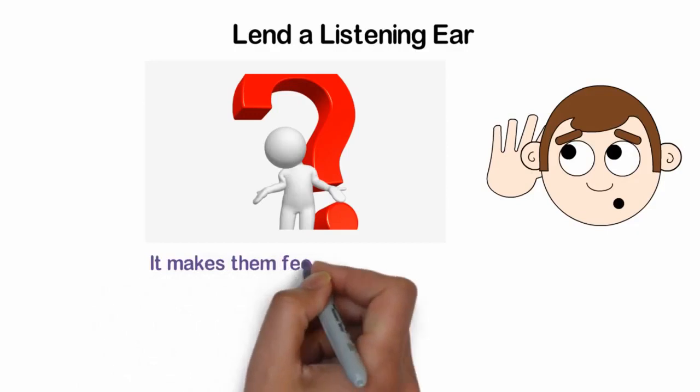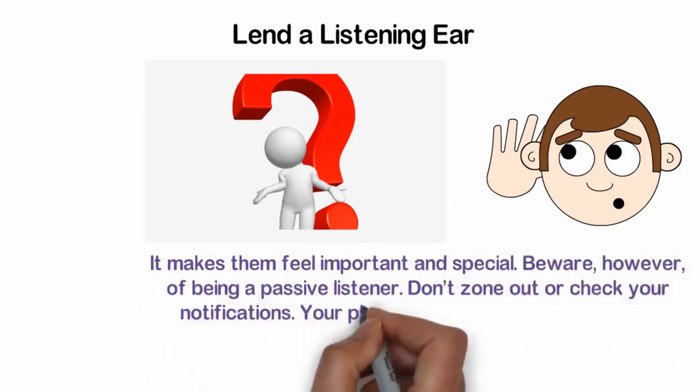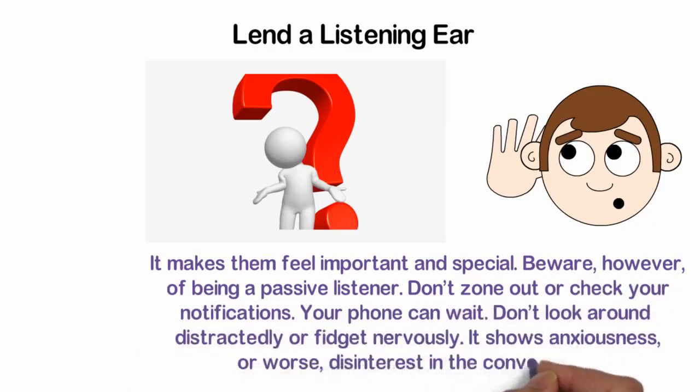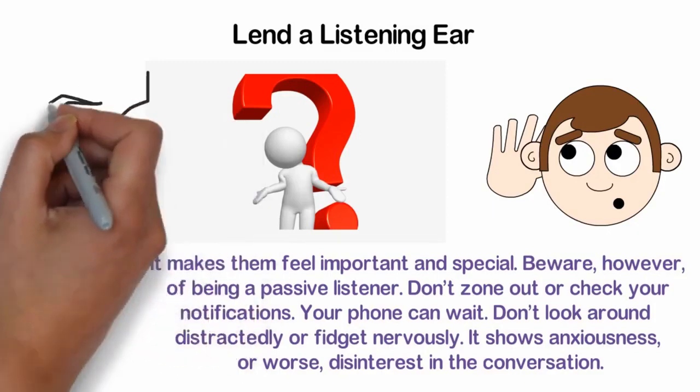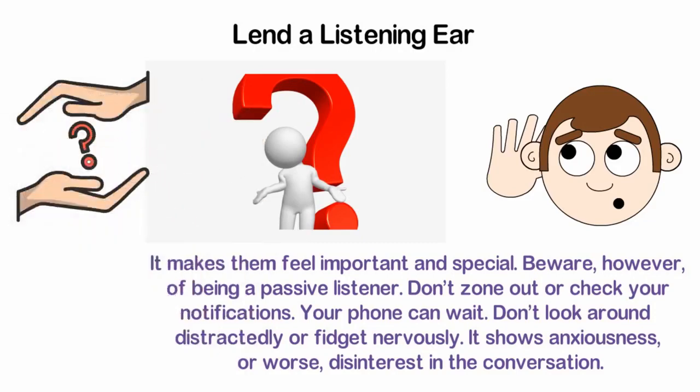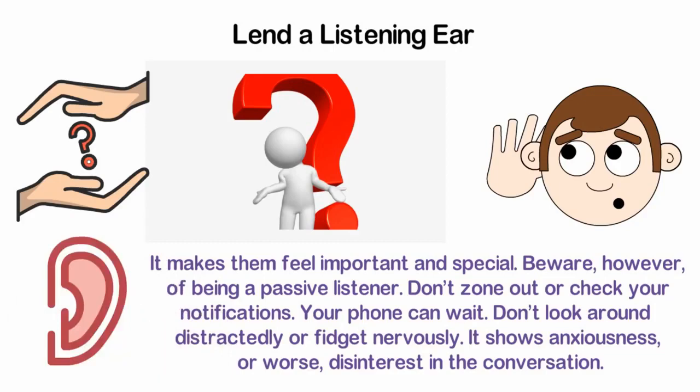Beware, however, of being a passive listener. Don't zone out or check your notifications. Your phone can wait. Don't look around distractedly or fidget nervously. It shows anxiousness or worse, disinterest in the conversation. Make sure you interject at the appropriate moments. Ask meaningful questions about what the person is talking about. Take an active interest in getting to know the person. Being able to listen is a great quality and an effortless way of instantly appearing more charming.